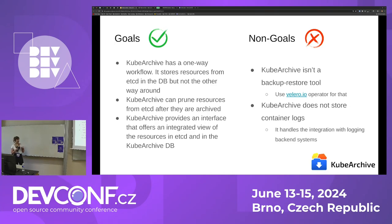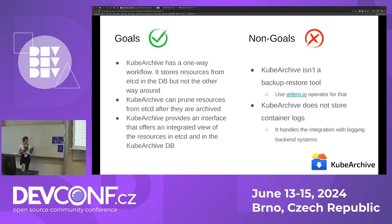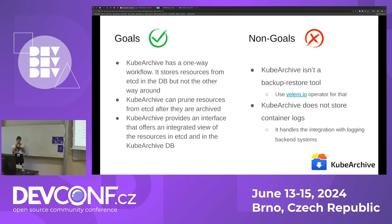Kubearchive can prune resources from etcd after they are archived — it's going to be a configurable thing, so it doesn't have to do it always, but it is the main point. Kubearchive also provides an interface that offers an integrated view of the resources in etcd and in the kubearchive database. So if you have some resources archived and some that aren't, the CLI gives you an integrated view of both.